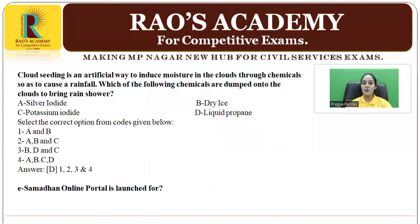It's quiz time. The question for today is: Cloud seeding is an artificial way to induce moisture in clouds through chemicals so as to cause rainfall. Which of the following chemicals are dumped onto clouds to bring rain showers? Options are silver iodide, dry ice, potassium iodide, and liquid propane. The second question is: the eSamadhan online portal is launched for the redressal of grievances for whom? We will be providing answers to these questions in upcoming videos.